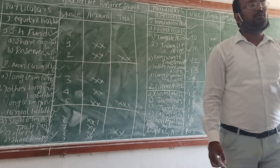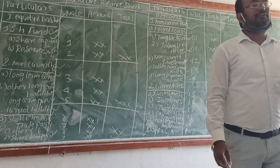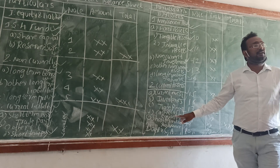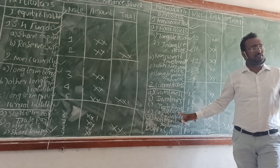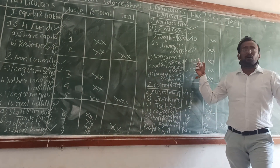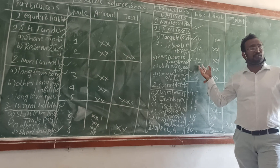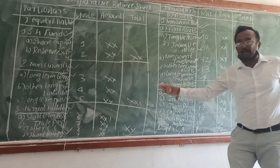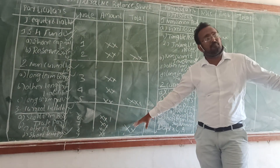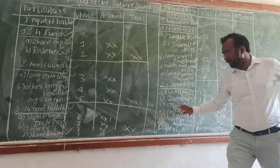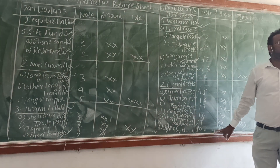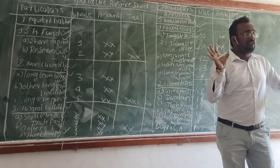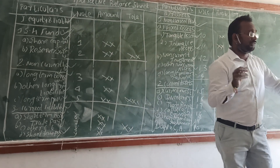The last item is short-term loans and advances, which includes prepaid expenses. Prepaid money is a current asset. This is the format of the comparative balance sheet. One more thing: total liability percentage equals total asset percentage, because liability is always equal to assets.